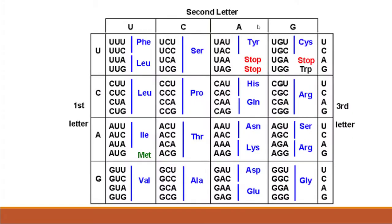Now let's look at the official codon table from biochemistry textbooks. The nucleotides are again arranged on the left, top, and right sides, showing all 64 codes with the amino acid each code produces. This table also shows that more than one genetic code can specify a single amino acid — a property called degeneracy.